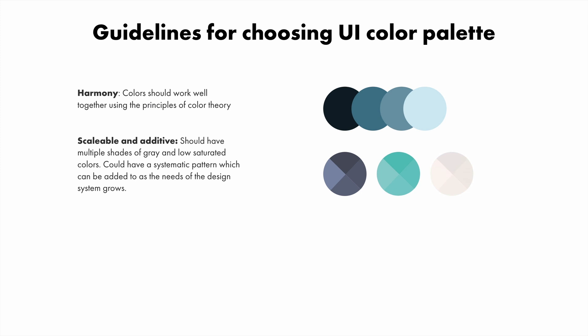Make sure to have multiple shades of gray and low-saturated colors to work with. Colors could also have a systematic pattern which can be added to as the needs of the design system grow — in this case, each hue has its own mini palette within it that can be expanded on when needed. Regardless of the color you choose, always tint your grays and blacks with a little hint of your brand color.